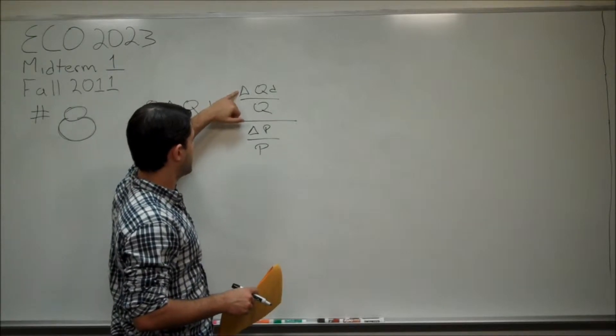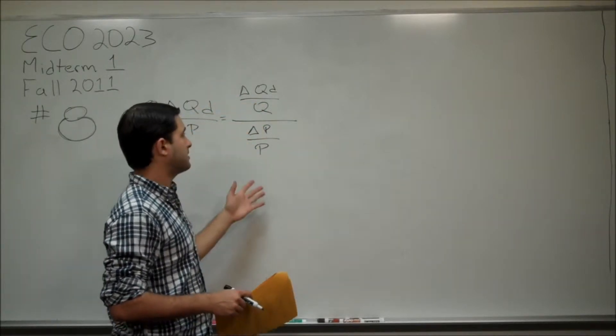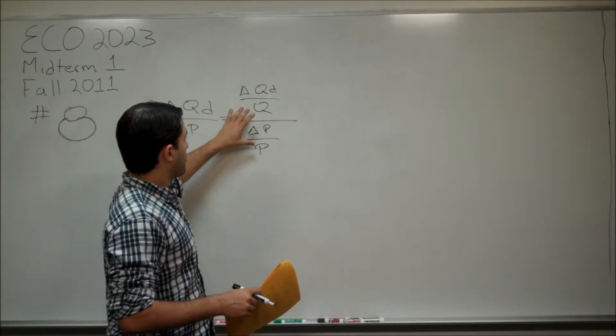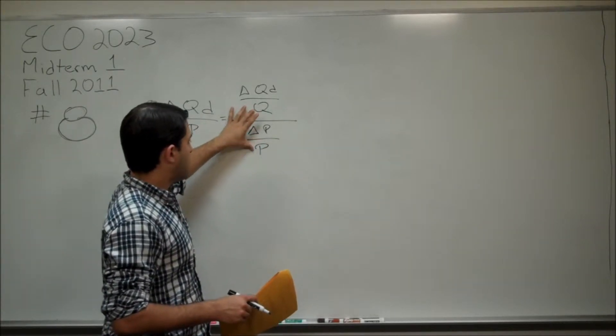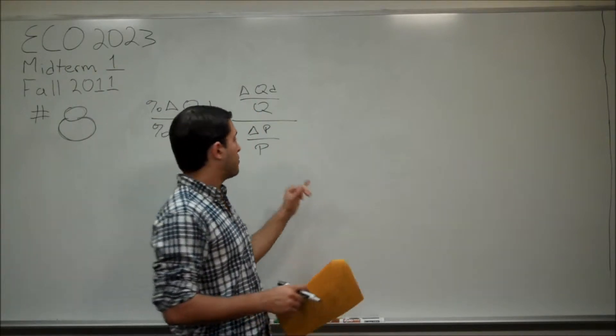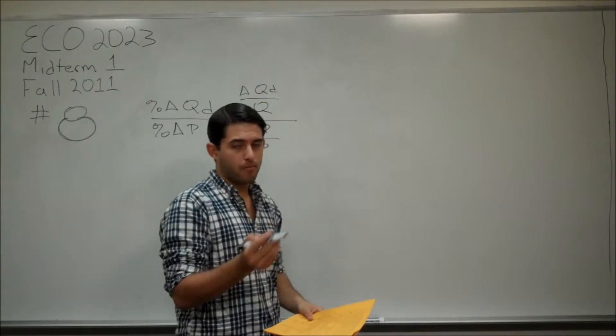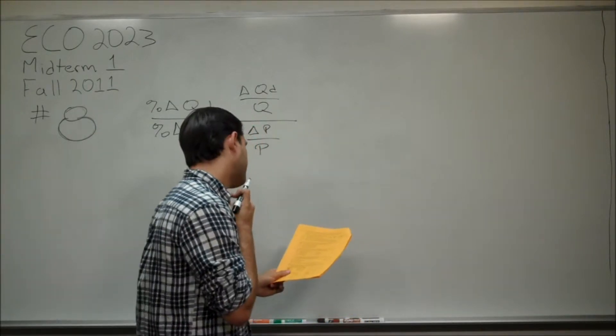With this formula, the change in quantity demanded and change in price is very easy. You just figure out the difference between the two quantities and the two prices. For the quantity point and the price point, it's important to remember that you have to put the midpoint. You can't choose either price. You have to choose the midpoint.